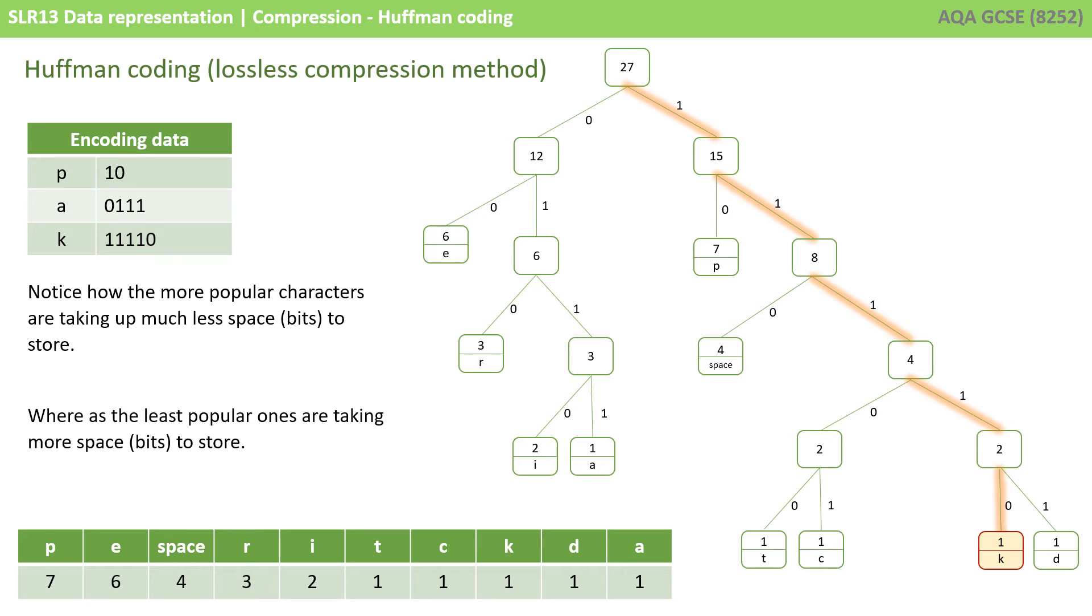Notice how the more popular characters are taking up much less space. Indeed, P only takes up 2 bits for its encoding. The less popular characters like A and K are taking up more bits, but that's okay as we're using them less frequently.